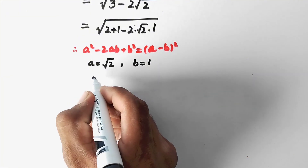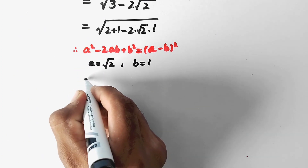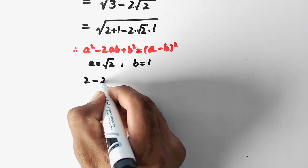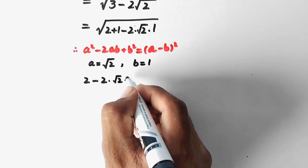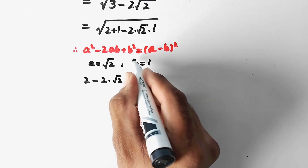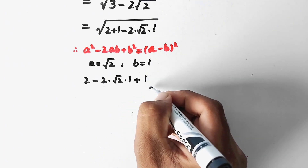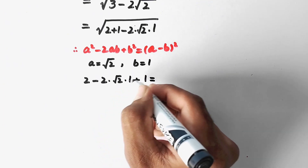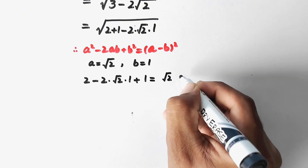By applying this formula, square root 2 squared will be 2, minus 2 times a (which is square root 2) times b (which is 1), plus b squared means 1 squared equals 1. So in closed form it will be (square root 2 minus 1) whole squared.